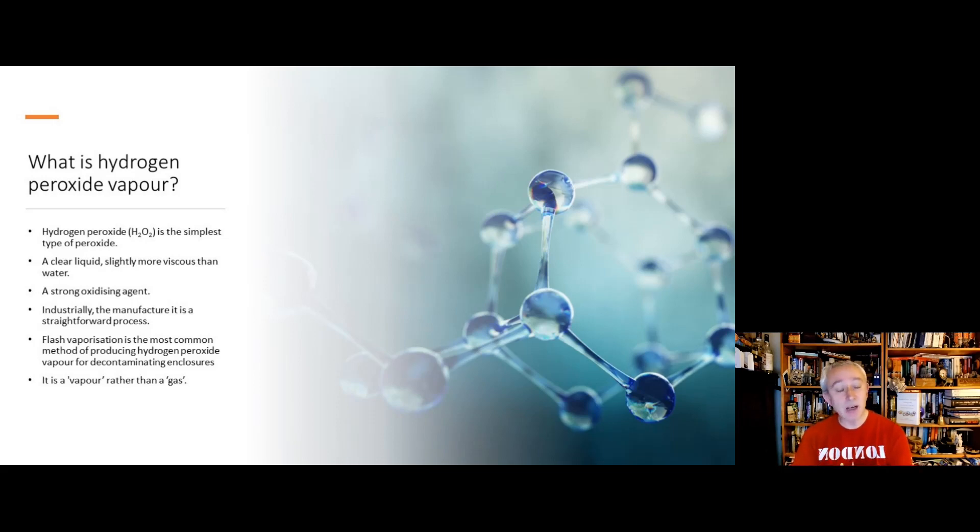And specifically, it's a vapor rather than a gas because it exists almost in the gas state, but there is a degree of liquid as well. And actually, the thing that makes hydrogen peroxide in vapor form most effective as a decontamination agent is just this margin between the gas and the liquid phase, and achieving that makes it a powerful oxidizing agent.